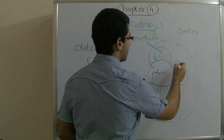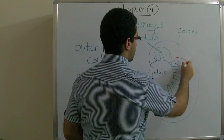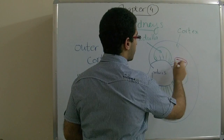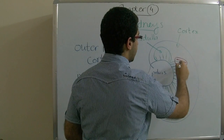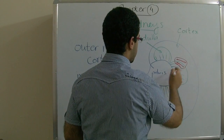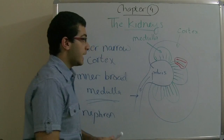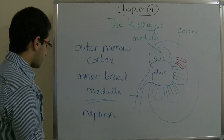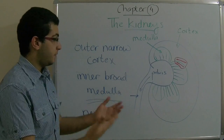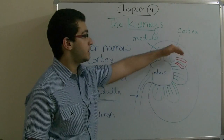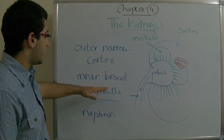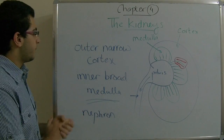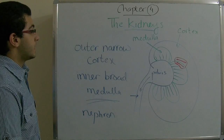And this outer region is the cortex. The nephron is positioned with its upper part inside the cortex and its lower part inside the medulla, because it contains loops — and we will explain this in the next video.